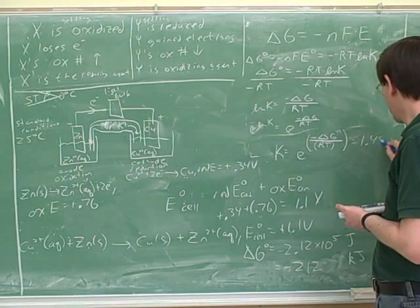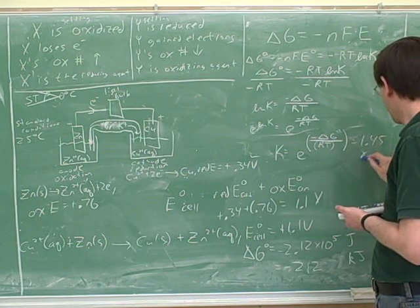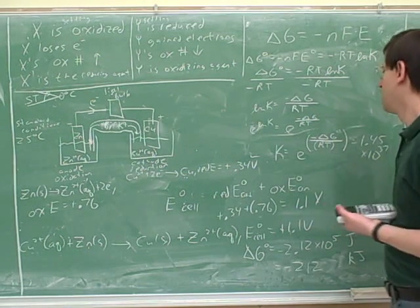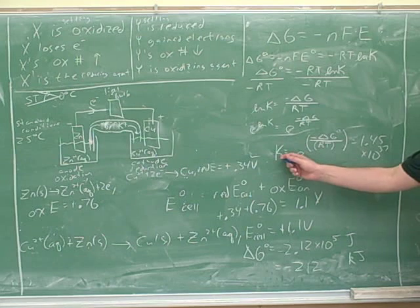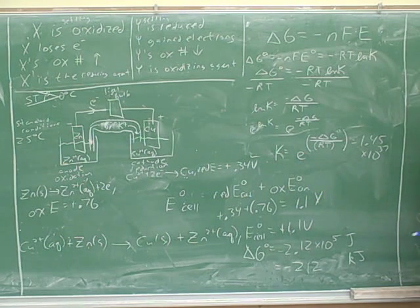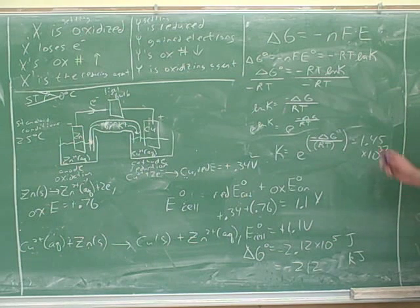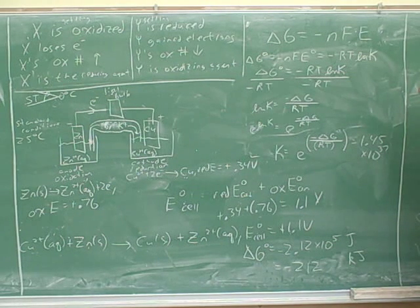1.45 times 10 to the 37. Which indicates this is a very favored reaction. Now this is something that doesn't have any units. K here doesn't have any units that we need to worry about. All right. So this is a highly favored reaction.